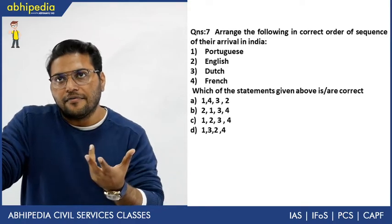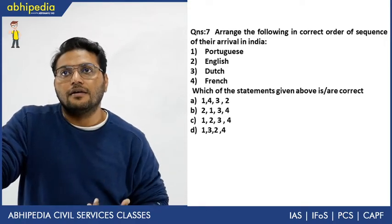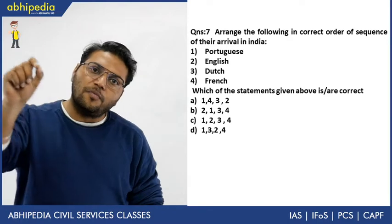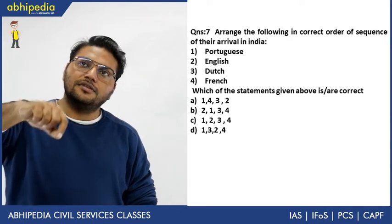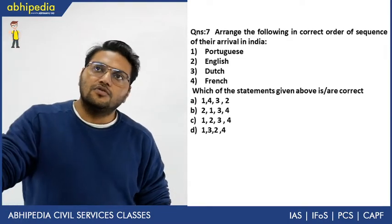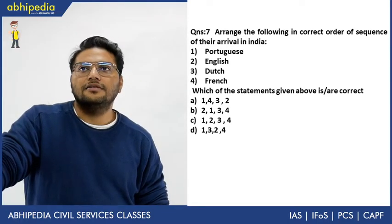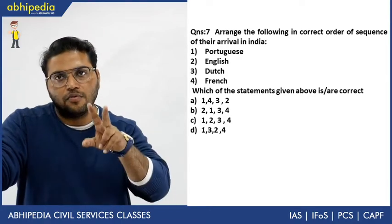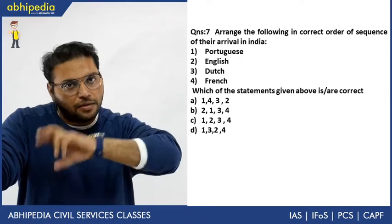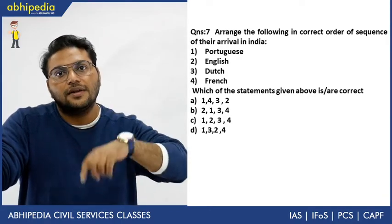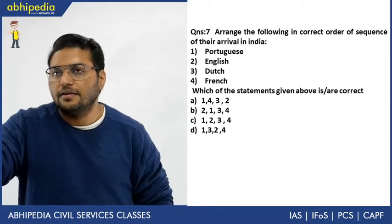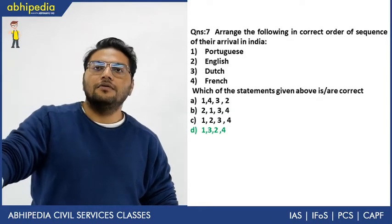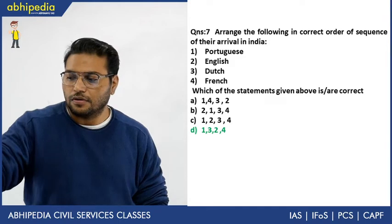You must know both orders — company establishment order as well as order of arrival in India. These are different. For arrival in India the sequence is Portuguese, Dutch, English, French. Answer is 1, 3, 2, and 4.